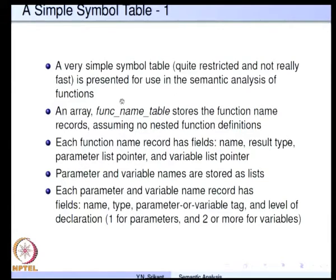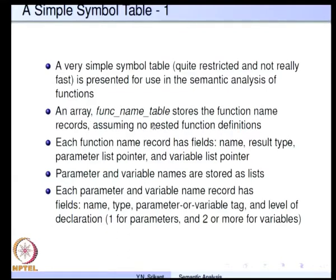Let us look at a simple structure to store a symbol table. Our data structure will be very simple and restricted — not particularly fast. A complex symbol table is actually an unrelated topic, and any complicated data structure may be suitable. It does not add value to semantic analysis as far as the lecture goes, so we will use a simple symbol table and leave more complicated structures for students to explore. We will have it as an array called the function name table, which stores function name records assuming no nested function definitions.